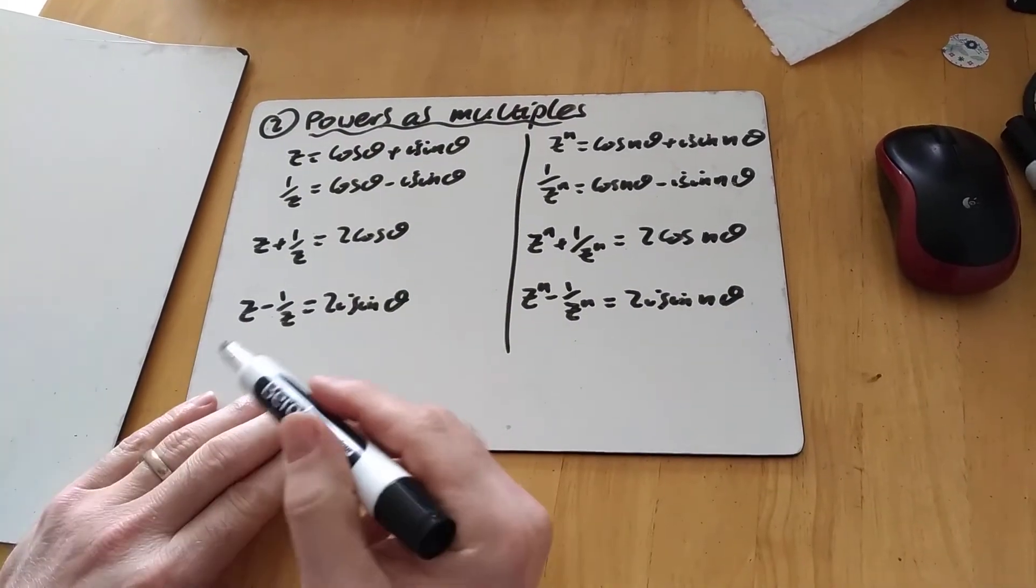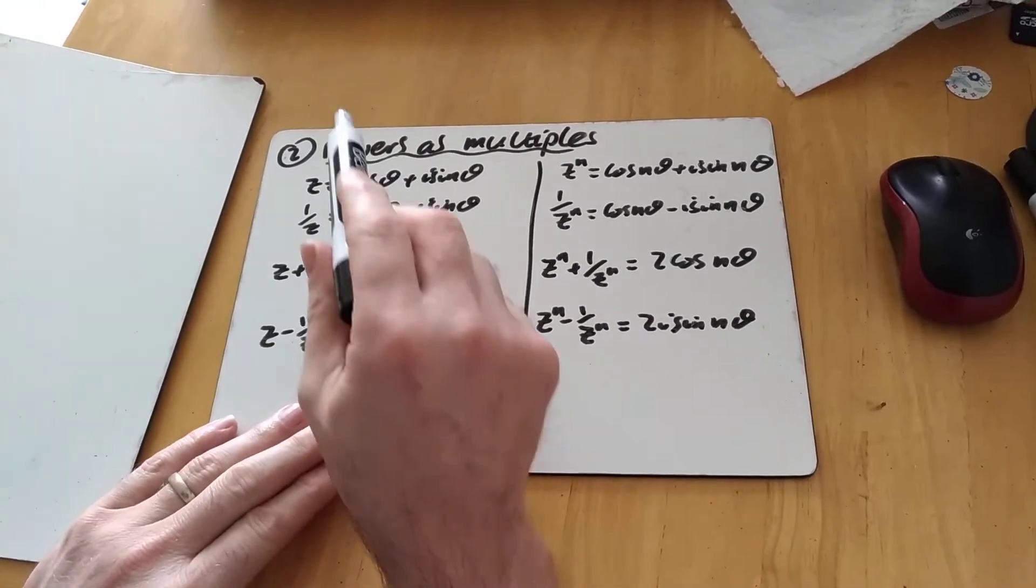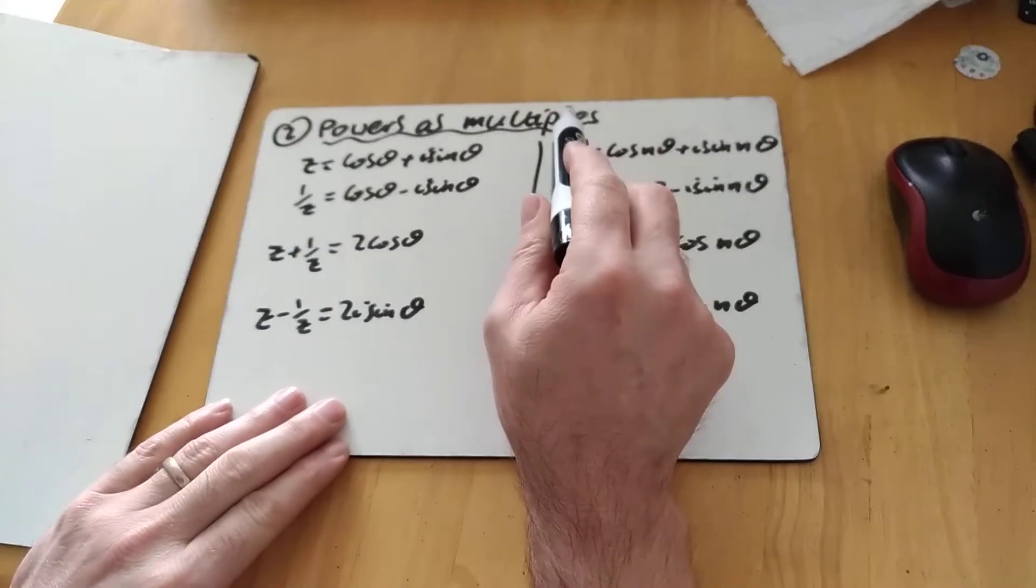Okay, the second use of De Moivre's Theorem with trig identities is when we're going to rewrite powers of sin and cos as multiples.